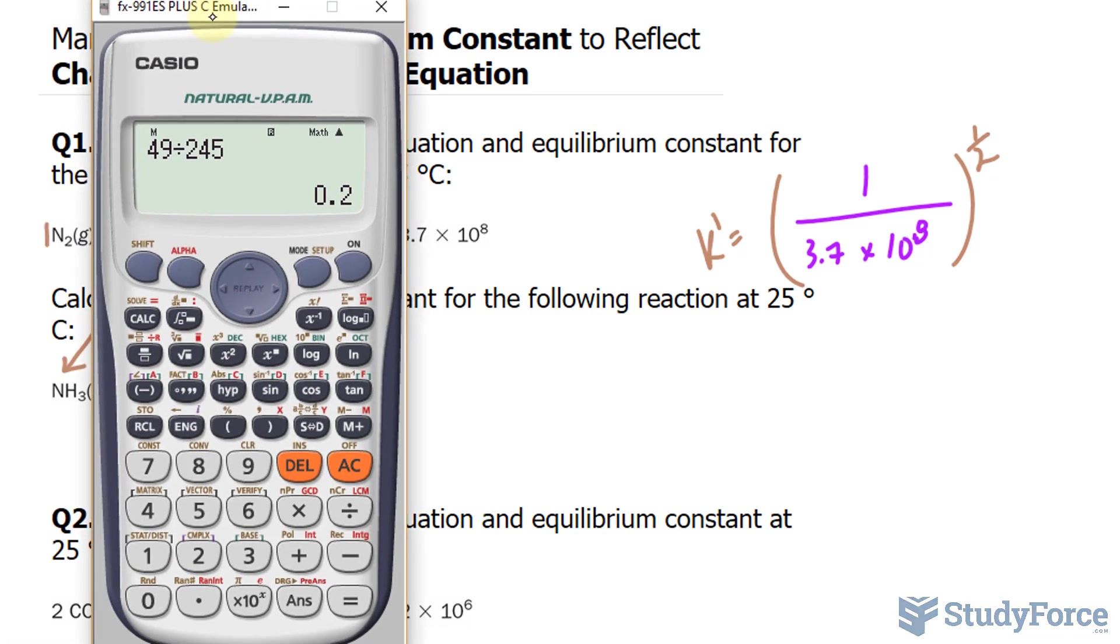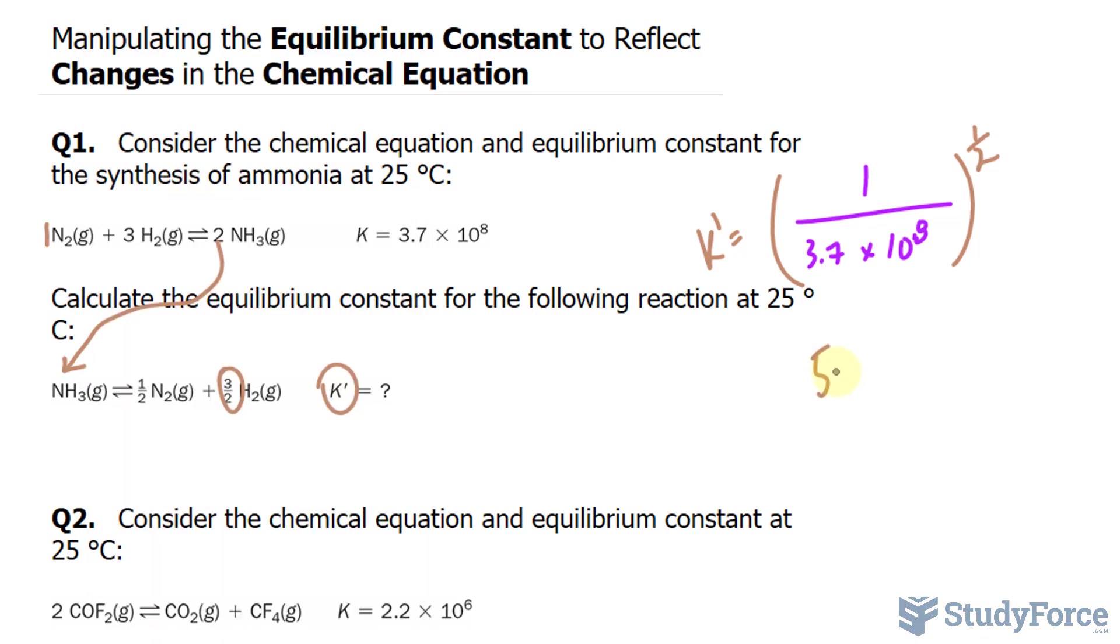Using our calculator, bracket 1 over parentheses, the number 3.7 times 10 to the power of 8. Close those parentheses and close the outer brackets. And raise this to the power of 0.5. You should end up with, to two significant figures, 5.2 times 10 to the power of negative 5. 5.2 times 10 to the power of negative 5 is our new constant.